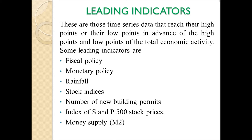Fiscal policies are the policies and measures taken by the central government to control the money supply or inflation in the economy. Monetary policies are those measures taken by the central bank, that is the RBI, to control the money supply in the economy. These two policies indicate the change that is going to happen in the economy. Rainfall indicates the monsoon state in the economy. Stock indices include SENSEX and NIFTY of NSE and BSE. Number of new building permits indicates change in the economy. S&P stands for Standards and Poor, a credit rating agency which acts as a good forecaster of the economy. Money supply, with types M1, M2, M3, and M4 — M2 is considered the leading indicator in this approach.